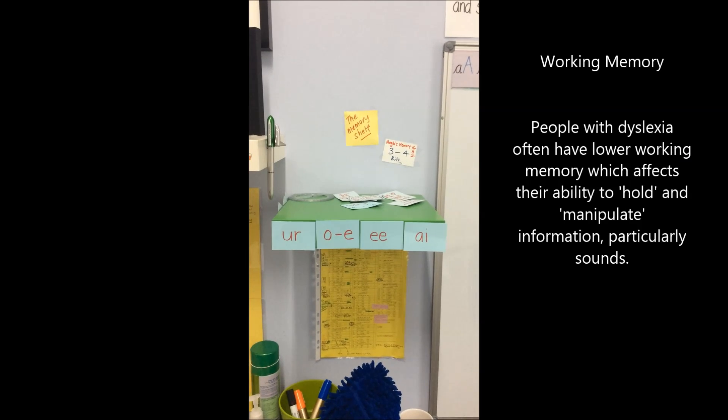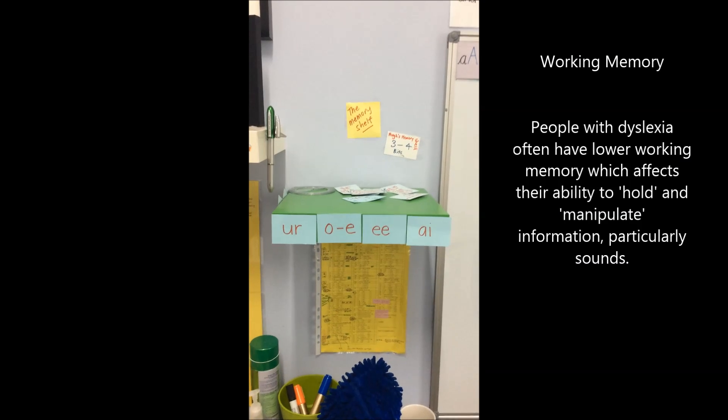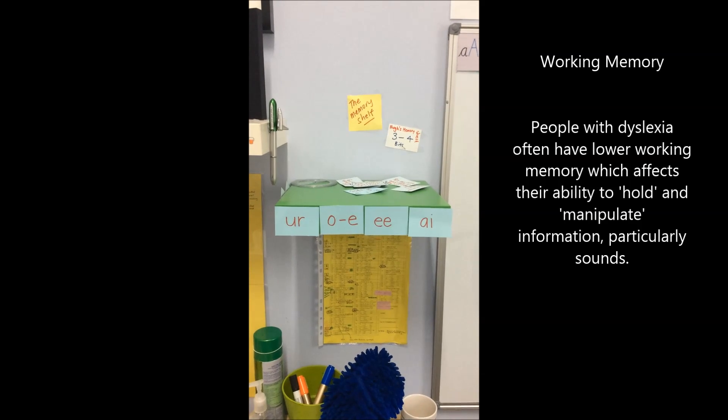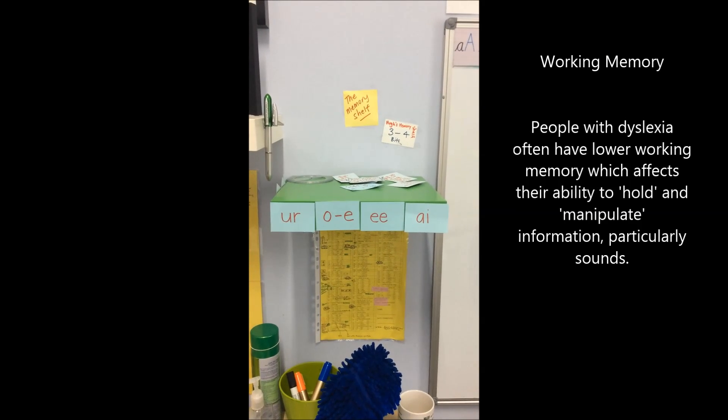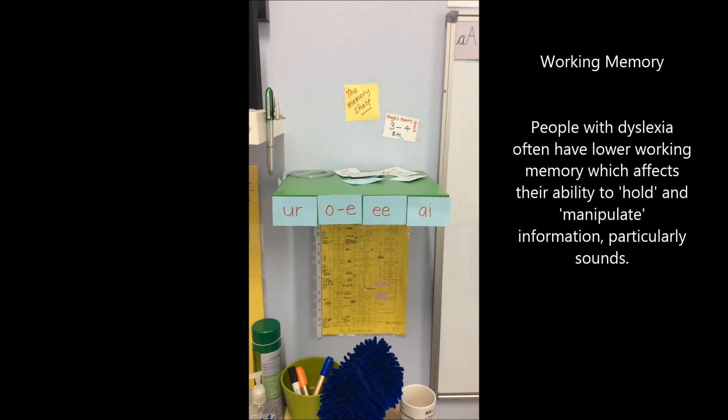Those of you who know a bit about working memory know it's limited. In the non-dyslexic population, working memory is limited to seven plus or minus two pieces of information. For our dyslexic community, that's often lower.